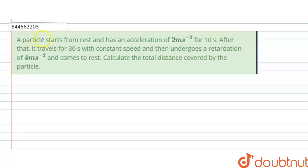The question is: a particle starts from rest and has an acceleration of 2 meters per second squared for 10 seconds. After that, it travels for 30 seconds with constant speed, and then undergoes a deceleration of 4 meters per second squared and comes to rest. Calculate the total distance covered.